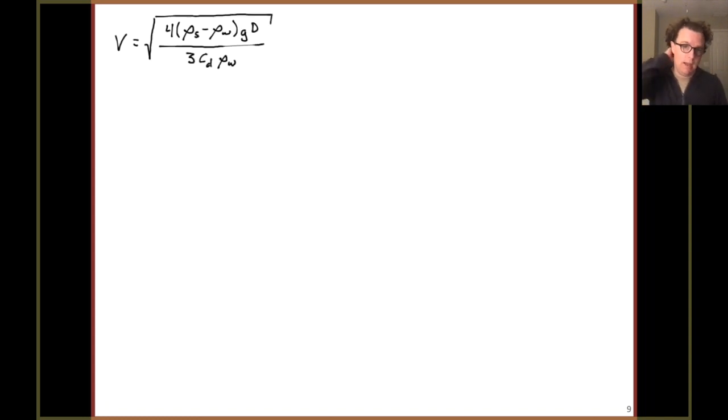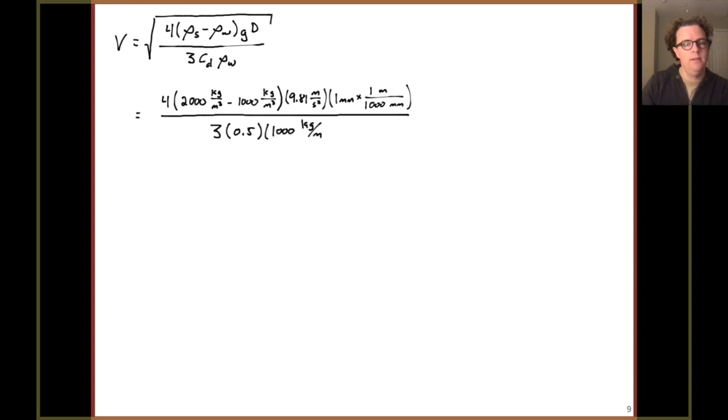Let's bring that equation back. Proceeding with a value of 0.5 for the drag coefficient, we have that 4 out front. 2,000 kilograms per cubic meter is the density of the sediment that was given, minus 1,000 kilograms per cubic meter, density of water. Multiply that by gravity. And we know the grain was 1 millimeter, so we'll go ahead and convert that into meters. Down in the denominator, constant 3 multiplied by the drag coefficient of 0.5 that we looked up in the table, and the density of water. So I calculate a settling velocity of about 0.16 meters per second for this sediment grain.